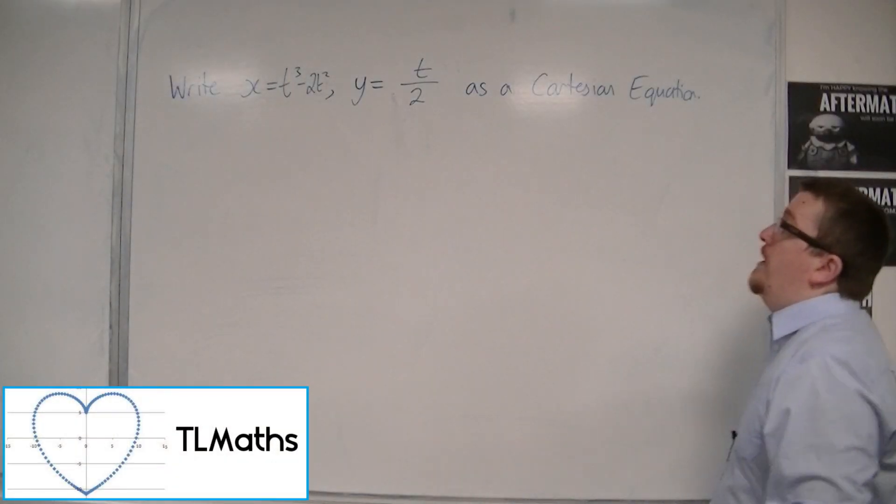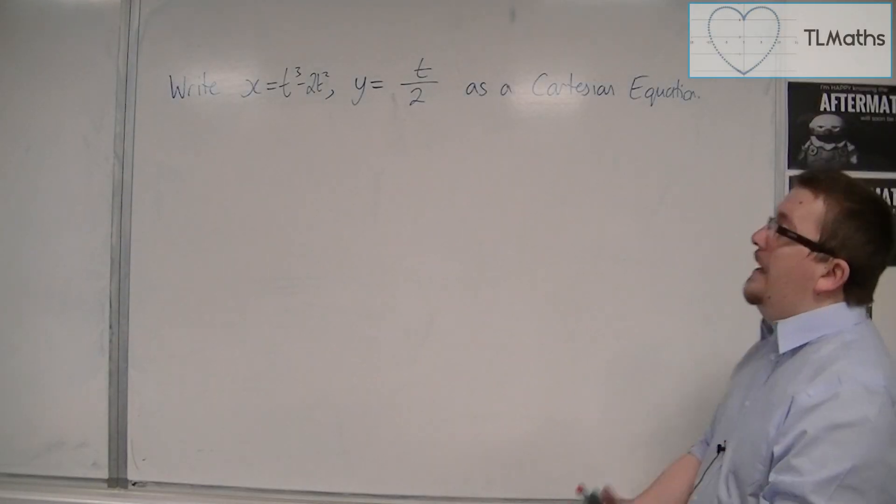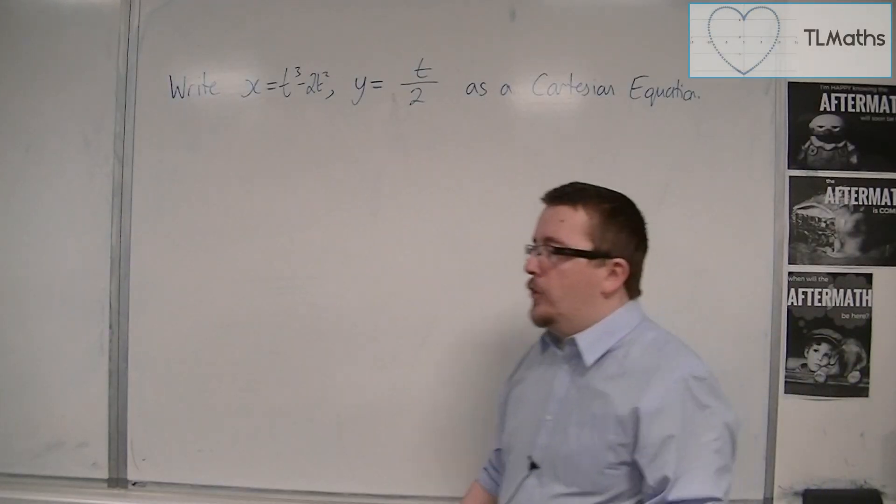In this video, we are going to write x = t³ - 2t² and y = t/2 as a single Cartesian equation.